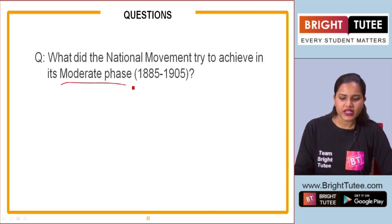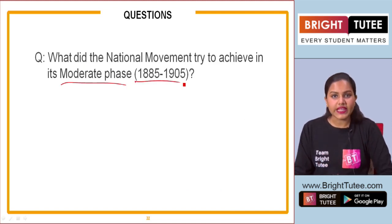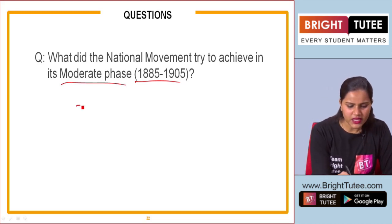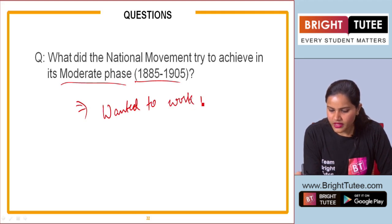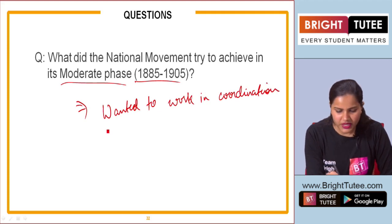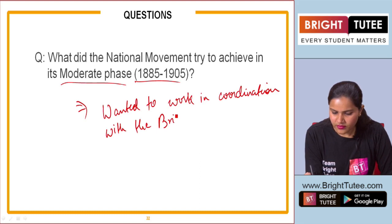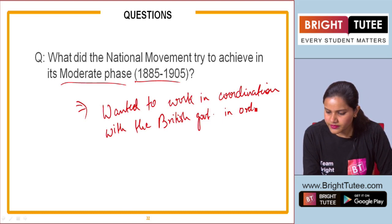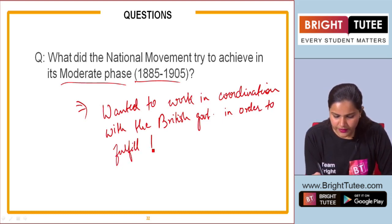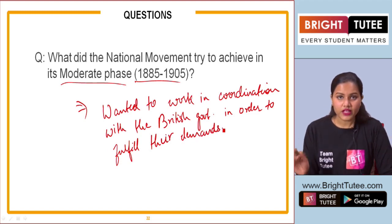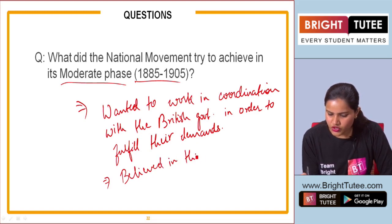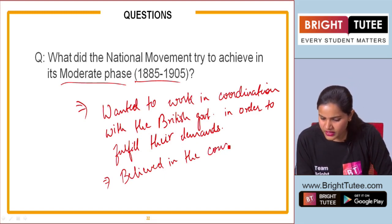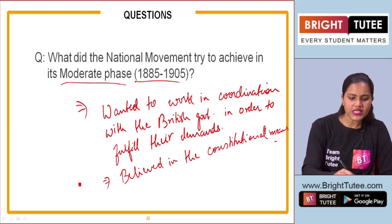The third question is: What did the national movement try to achieve in its moderate phase from 1885 to 1905? During this period they wanted to work in coordination with the British government in order to fulfill their demands. They believed in constitutional means because they had full faith in the British justice system, and through constitutional means they were trying to bring about major reforms in the country.